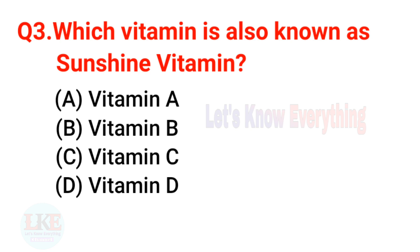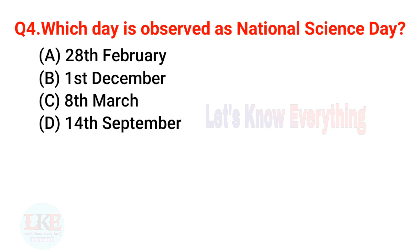Question 3: Which vitamin is also known as the sunshine vitamin? Right answer: Vitamin D. Question 4: Which day is observed as National Science Day? A) 28th February, B) 1st December, C) 8th March, D) 14th September. The right answer is option A, 28th February.